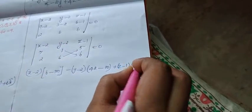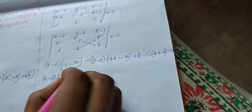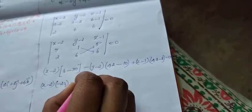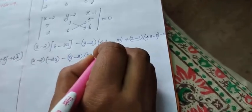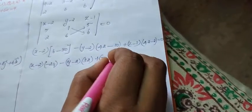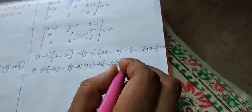Plus (z minus 1) into, our answer is (7, 6 are again 42 minus 2) equal to 0. So, now what is our answer: (x minus 2) into (6 minus 30 minus 24).